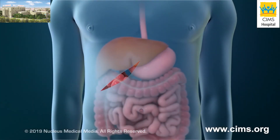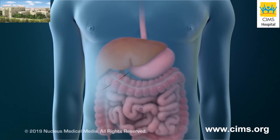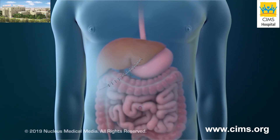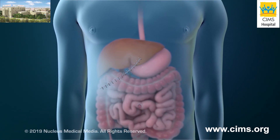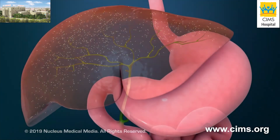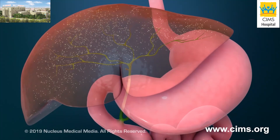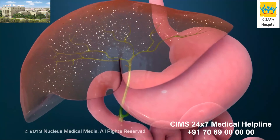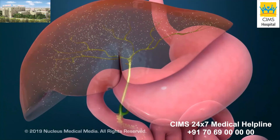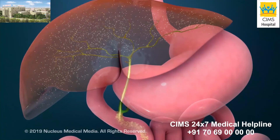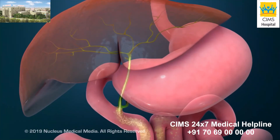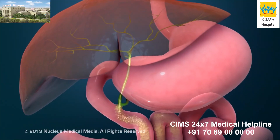At the end of the procedure, your incision will be closed with staples, stitches, or skin glue. Once your gallbladder has been removed, you will still be able to digest fat because bile will flow directly from your liver into your small intestine.